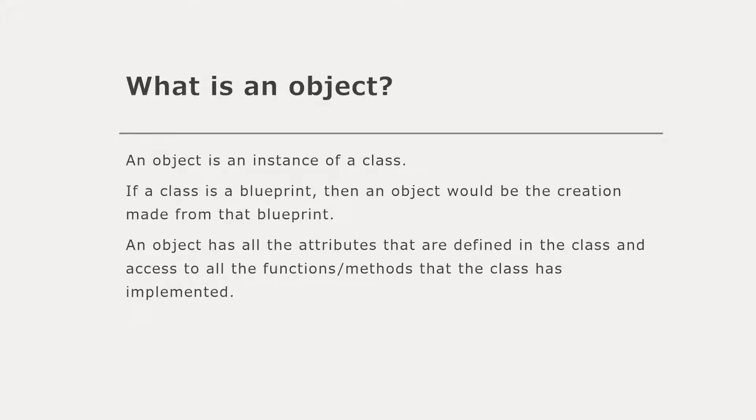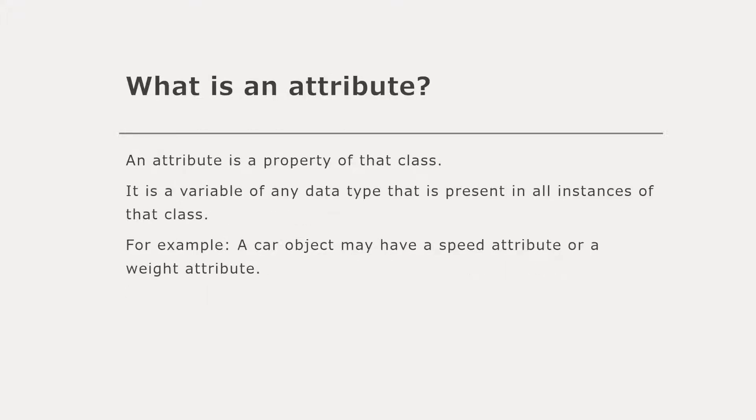The object is made using the constructor present in the class. An attribute is a property of the class — just a variable. It can be of any data type, and it's present in all instances of that class. For example, a car object may have a speed attribute, a weight attribute, a color attribute, a model, or a make attribute. An attribute is just data that a class has — like a description or the properties of that class. All objects made from that class have their own unique set of attributes.